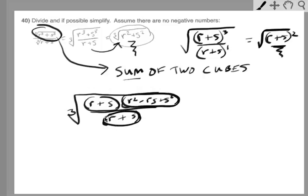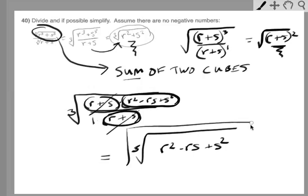And when you have all multiplication, multiplication in the bottom, multiplication in the top, you could cancel one for one. And so the answer here is going to be cube root of r squared minus rs plus s squared, all over one, or simply written like this. That is it.